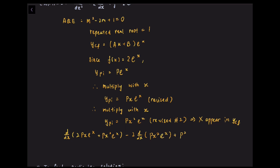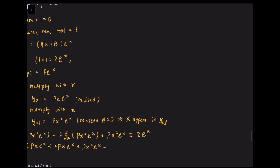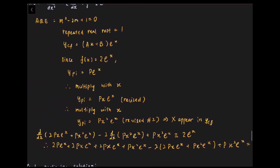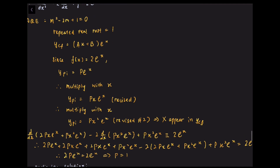Feeding the particular integral through the given differential equation gives d/dx(2px·eˣ + px²·eˣ) - 2·d/dx(px²·eˣ) + px²·eˣ = 2eˣ. Simplifying the equation, we obtain p = 1. So y_PI = p·x²·eˣ, and since p = 1, y_PI = x²·eˣ.